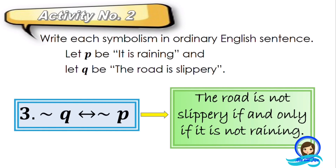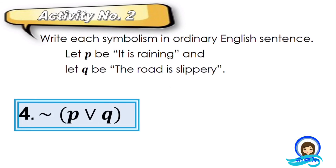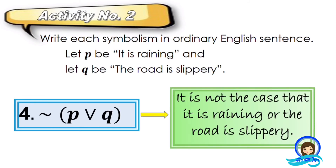It's just easy, right? For question number four, the translation is: it is not the case that it is raining or the road is slippery. The symbol inside is disjunction, so we use 'or.' And since the disjunction of P and Q is being negated, we use 'it is not the case that.' So the translation is: it is not the case that it is raining or the road is slippery.